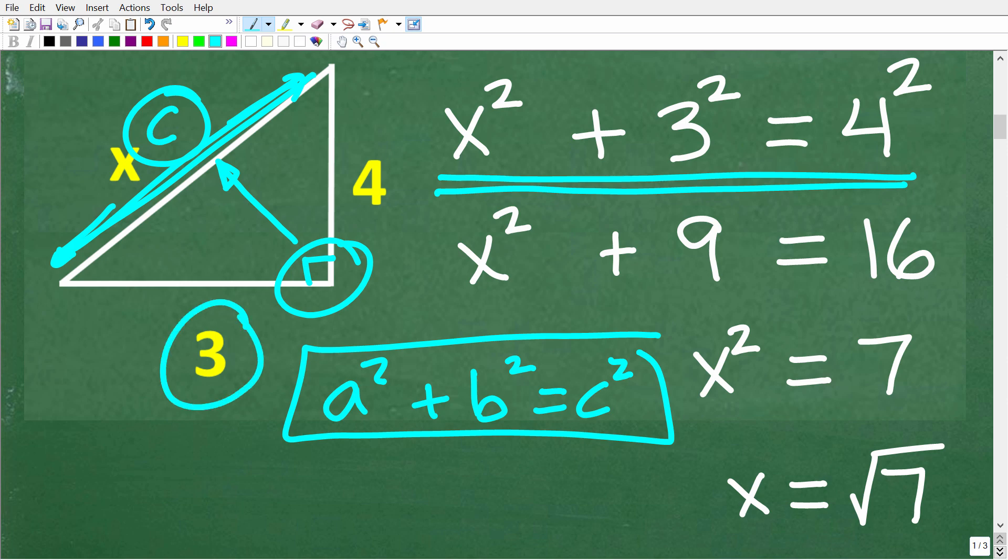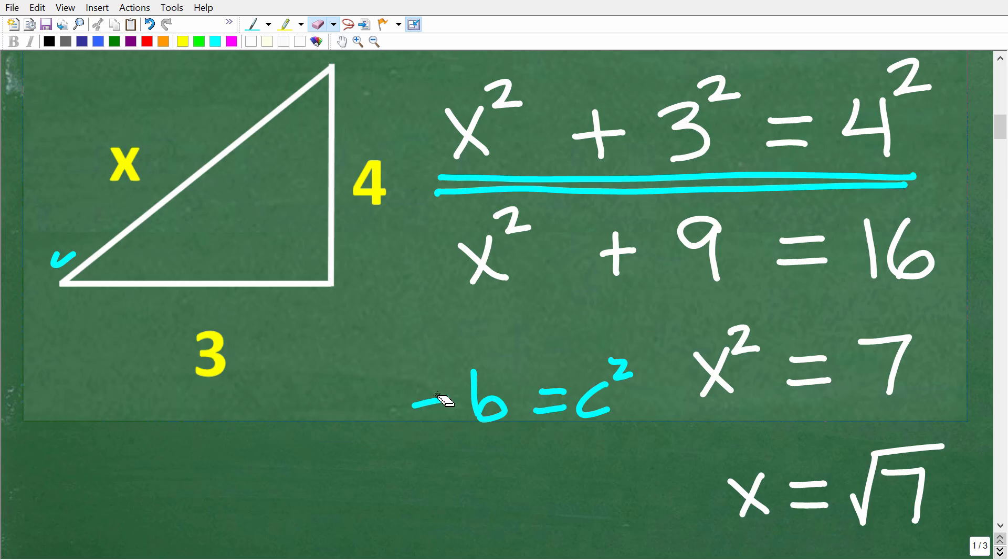Okay, so in other words, this side right here could be a and this could be b, but this longest side, again, the hypotenuse, is always c. So to solve for x here, we need to set up this problem correctly, and this problem is set up incorrectly. Okay, so that's mistake number two because we have x squared plus 3 squared is equal to 4 squared.